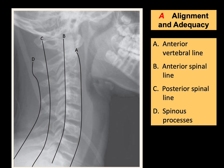Second, we are going to apply A-B-C-D. The first A is alignment and adequacy. For simplicity, we are going to talk about alignment in the form of A-B-C lines. The A line stands for the anterior vertebral line, drawn on the anterior border of the vertebral bodies. The B line represents the anterior spinal line, and C is the posterior spinal line. D is for the spinous processes line.